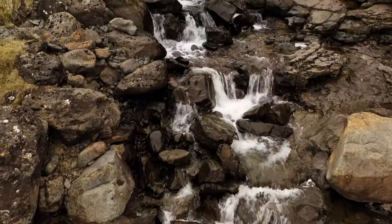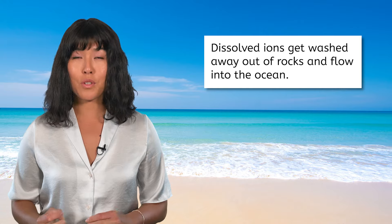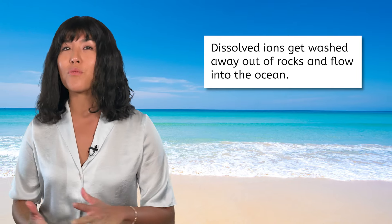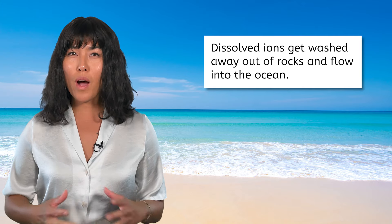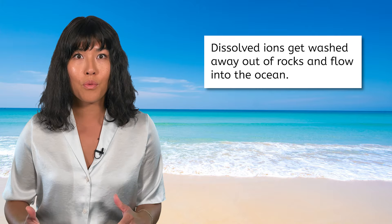But wouldn't that just make the ground around the rocks full of saltwater? How does it end up making the ocean salty instead? Remember the steps of the water cycle. Water that runs over the land is collected into streams, rivers, and lakes. Most of these eventually lead to the ocean! So the sodium and chloride ions find their way to the ocean through the water cycle.